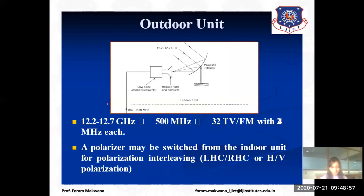With this frequency bandwidth, we can support a total of 32 TV or FM channels with 2 MHz each. The polarizer can be switched from the indoor unit. Polarization — the orientation of the wave — can be vertical, horizontal, elliptical, or circular. For this system we use circular polarization (left-handed or right-handed) or horizontal/vertical polarization.